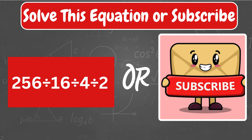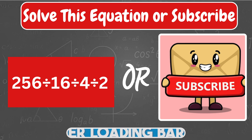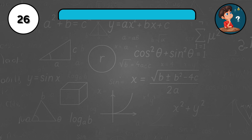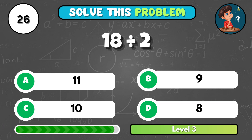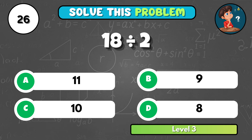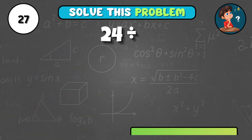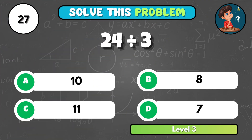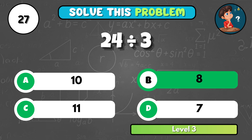Try solving this question carefully and see if you can get it right. If you find it too tricky, make sure to subscribe so you can practice with more easy and fun quizzes. Getting harder now — what's eighteen divided by two? It's B, nine. Can you quickly figure out twenty-four divided by three? That's B, eight.